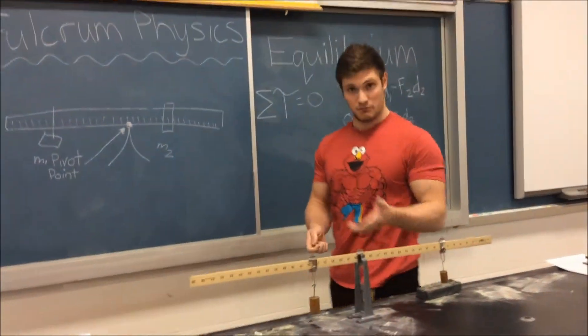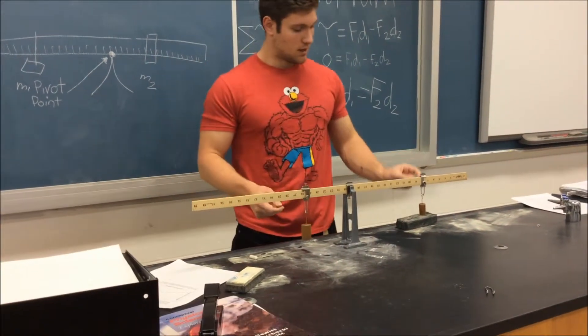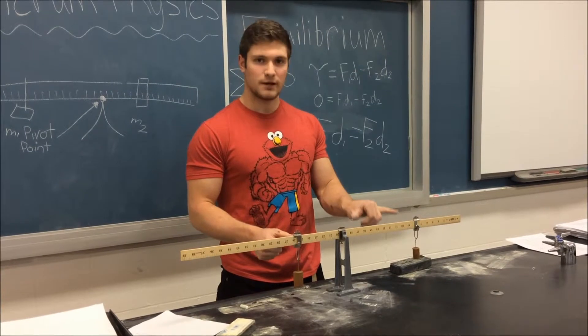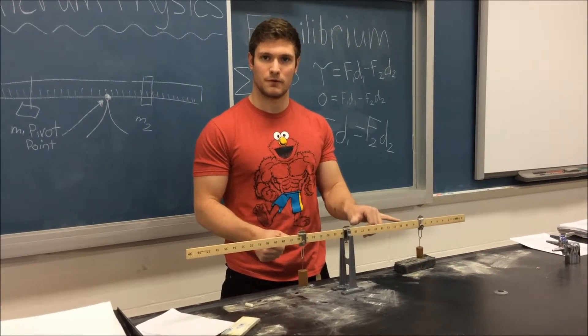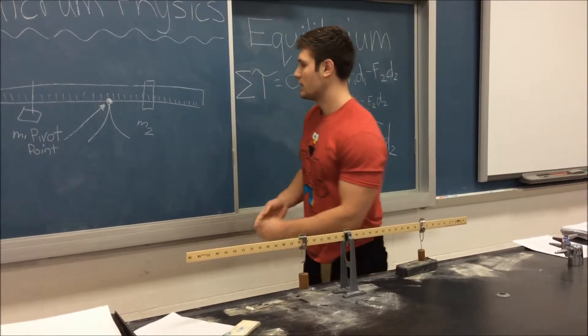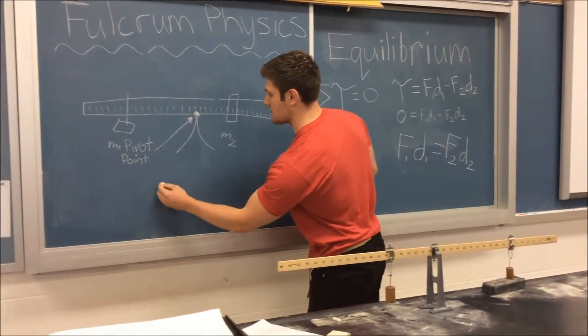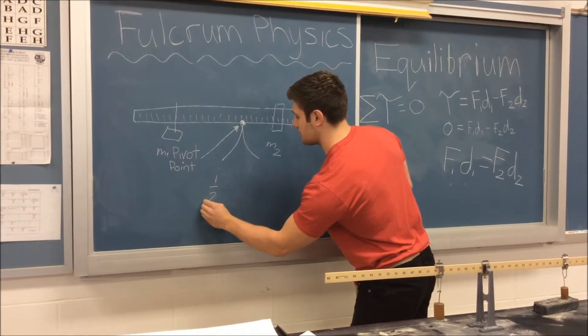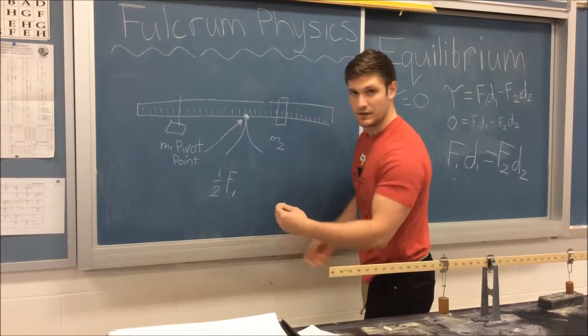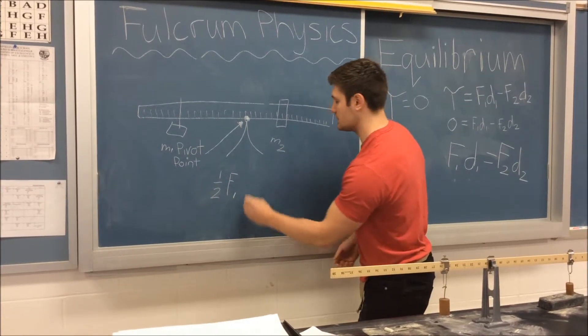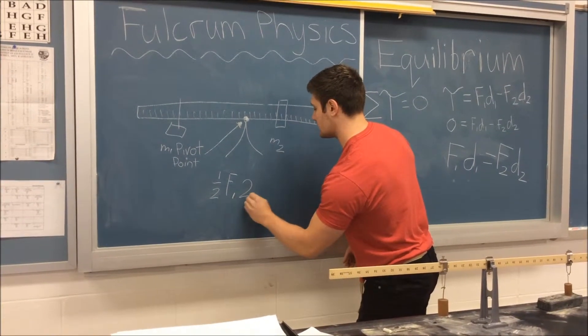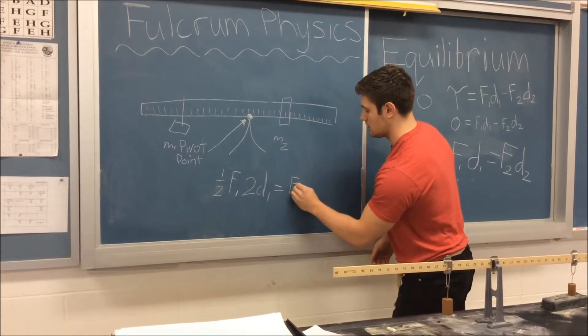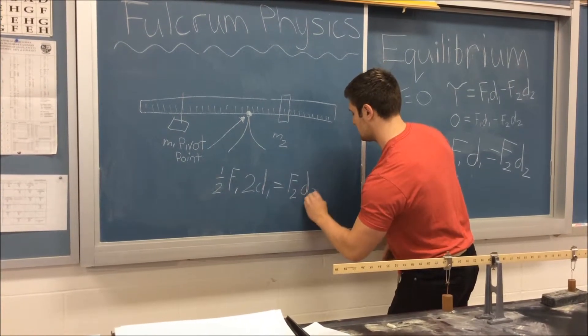So when you get into a scenario in our lab where you have two hanging masses where one is twice the mass of the other, you'll see that the lighter mass is twice the distance from the fulcrum. We can see this in our equation because this mass is half as massive, so there's half as much force, so it's one half F1. Then you need to make up for that one half in the equation by adding twice the distance to D1 is equal to F2 D2.